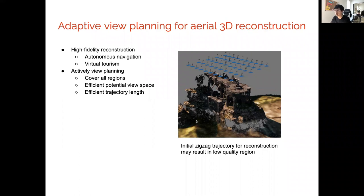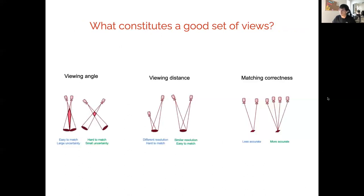In order to obtain high fidelity reconstruction, we have to do some active planning for those more complex regions, where we need to cover all the regions with good quality. We have to efficiently sample the potential view space because the views can be selected anywhere. Also, we have to guarantee some trajectory-length optimality so that it doesn't deviate too much from the optimal.